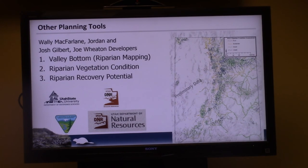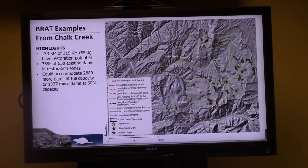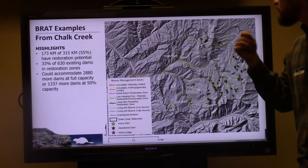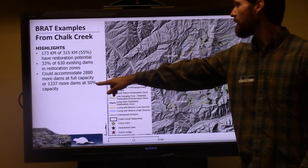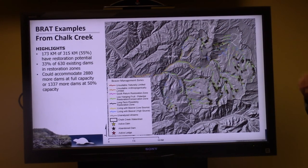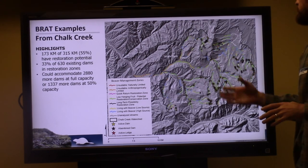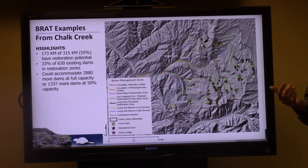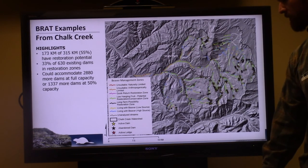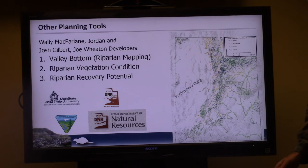Question from audience: When you say there are only 33% of 630 existing dams, that's only 33% of the entire potential — how does this relate to what was there historically? Answer: Full capacity in the model represents more of a historic capacity — what could be supported with historic riparian vegetation and without intensive land use. You're limited by the quality of your input data, and LANDFIRE has 30-meter resolution so there are some issues, but in general we've been pretty impressed with the quality of the outputs.